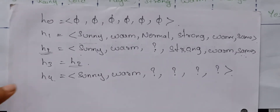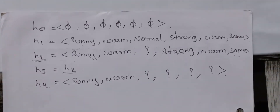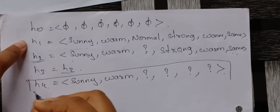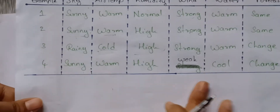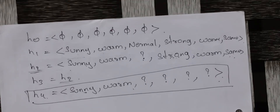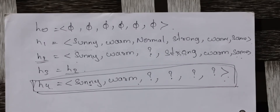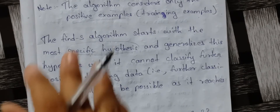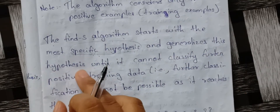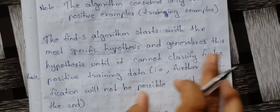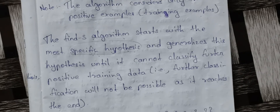So this is the Find-S algorithm for the Enjoy Sports example. The final hypothesis is: sunny, warm, and four question marks. The Find-S algorithm starts with the most specific hypothesis and generalizes it until it cannot classify further positive training data — meaning classification is not possible as it reaches the end.